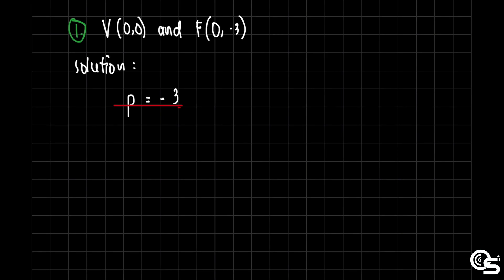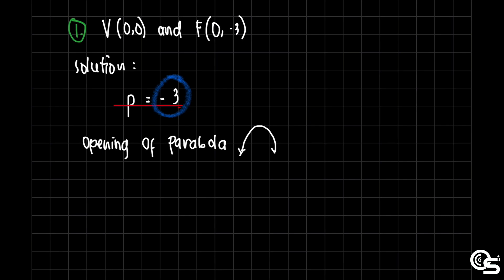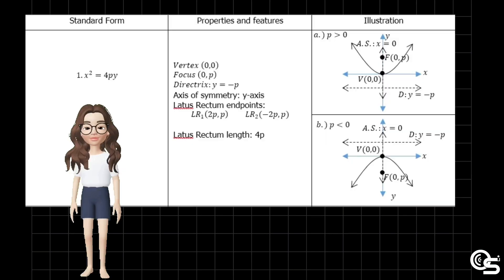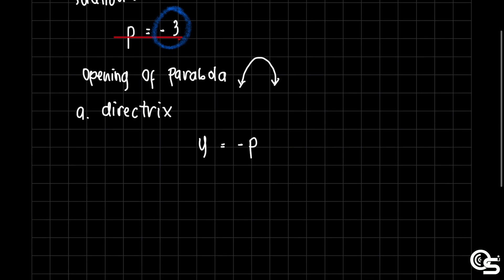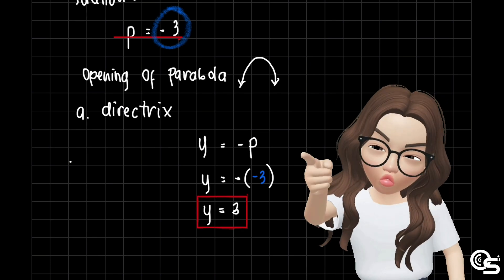Next, let us identify the opening of the parabola. Since the focal distance is negative, we can say that the parabola opens downward. Going back to the summary table, the equation of the directrix for a downward-opening parabola is y equals negative p. Substituting p equals negative 3, we get y equals positive 3. That is the equation of our directrix.